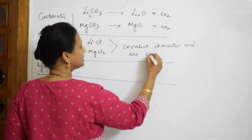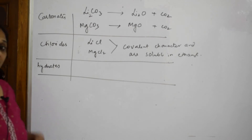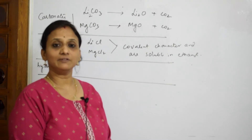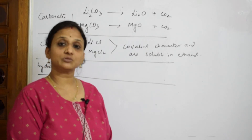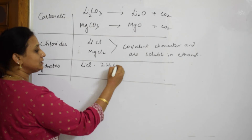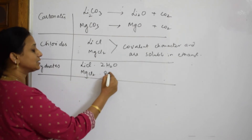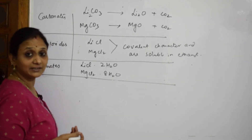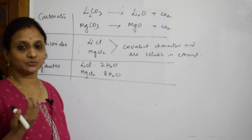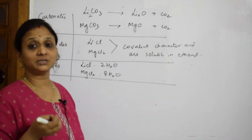Lithium chloride and magnesium chloride are deliquescent in nature — when left outside, they absorb moisture. When LiCl absorbs moisture it forms the hydrate LiCl·2H₂O (water of crystallization). Magnesium chloride absorbs moisture and forms MgCl₂·8H₂O. Because they absorb water, we call them deliquescent salts. These are the key similarities between lithium and magnesium.